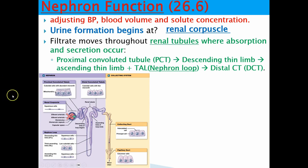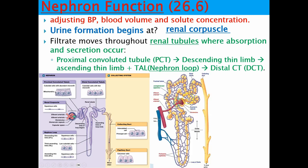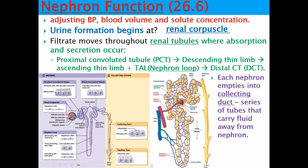The peritubular capillaries cover a huge portion of the tubular network — this is where all the exchange between the tubes and capillaries happens. Each nephron empties into collecting ducts, which are separate from the nephron because several nephrons join into one collecting duct. Since multiple nephrons contribute to it, the collecting duct is not considered part of the nephron.